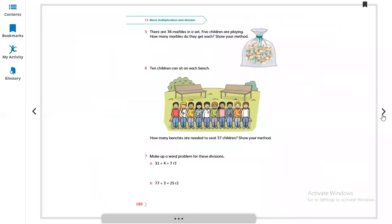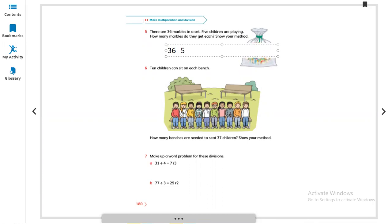Let's move to the next page. Question number 5: There are 36 marbles in a set. 5 children are playing. How many marbles do they get each? Show your method. So there are 36 marbles in a set, 5 children are playing. So 36 divided by 5 equals what? Again, the same method. In the table of 5, is 36 coming? No. So 5 multiply by 7 is 35, and so there is a reminder equal 1. So 7 remainder 1. 7 multiply by 5 is 35 plus 1 equals 36.